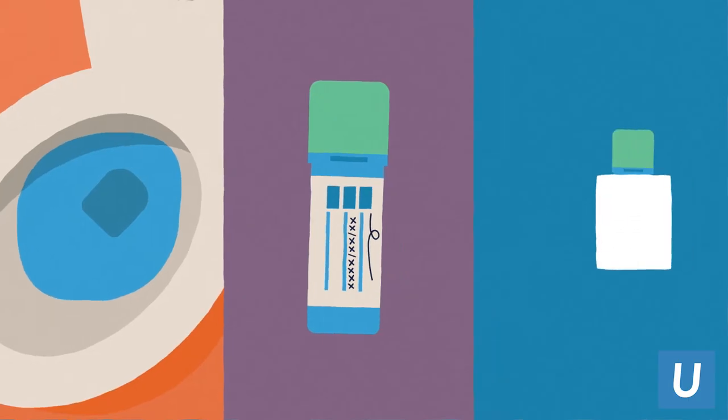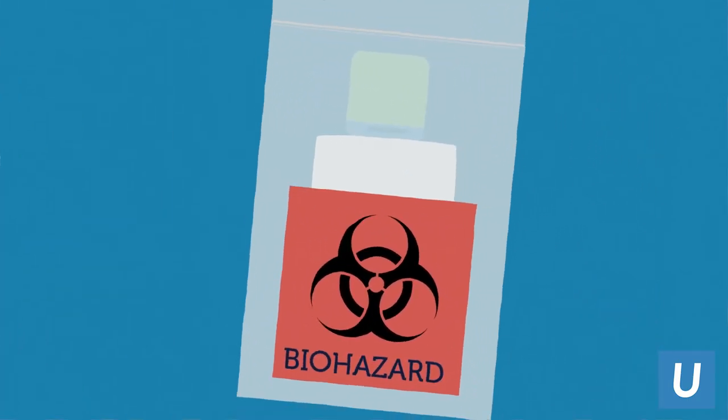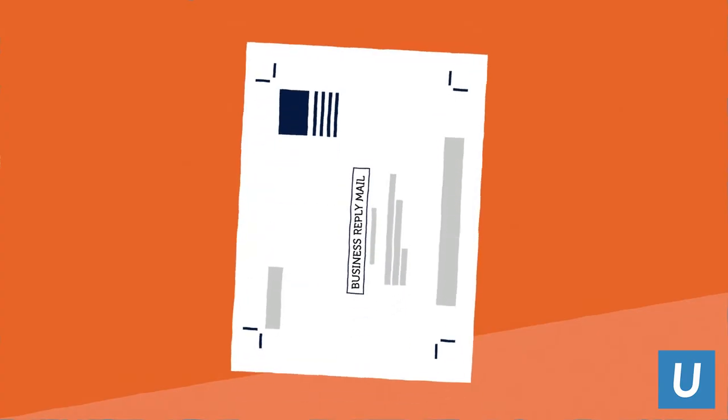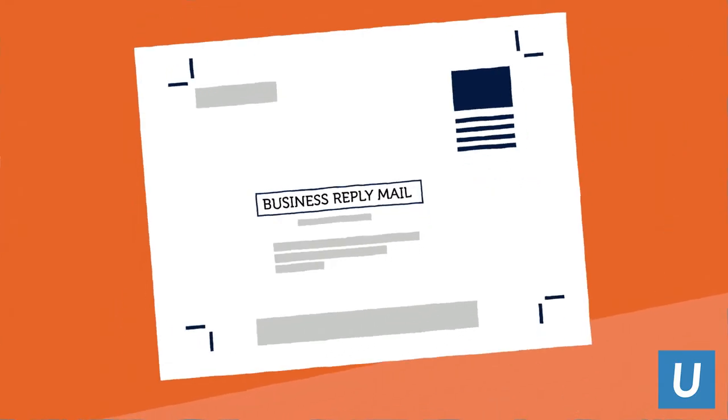Then, wrap the sampling bottle in the absorbent pad and insert into the biohazard bag. Place the biohazard bag with your sample inside the return mailer. Seal the return mailer securely and drop the prepaid mailer into the mail.